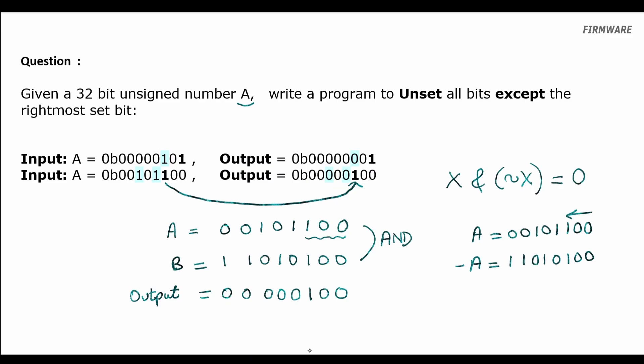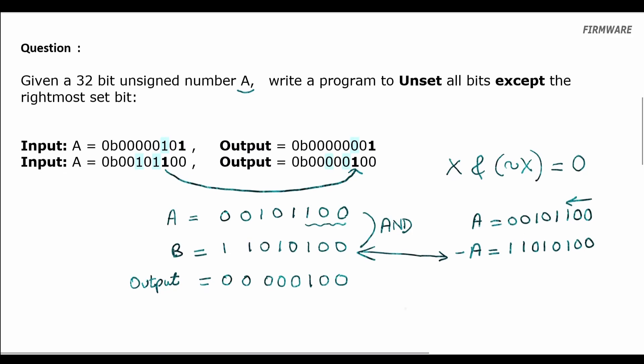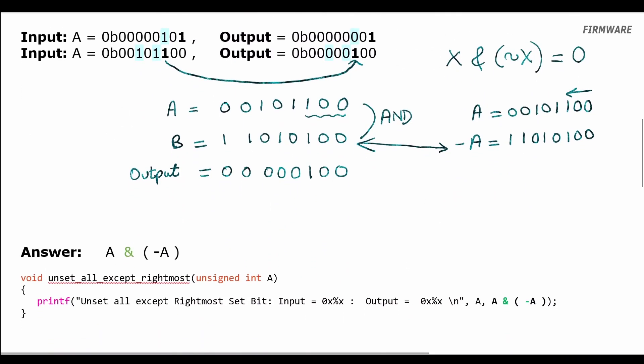But wait, these two numbers are the same! Did you get the logic now? To unset all the bits except the rightmost one, we need to do an AND operation between A and minus A. Because when we did minus A, we were actually inverting the bits starting from the rightmost one towards MSB, and that helped us to solve this problem where we don't want to touch the rightmost one and we want to unset all other ones.